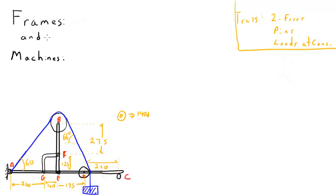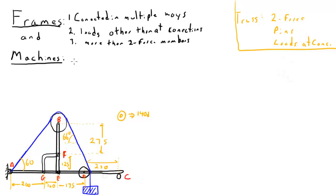So frames and machines are a little bit different. For frames and machines, we're talking about systems that can be connected in multiple ways. They can have loads other than at connections and more than two force members. A frame is a static system, so there's nothing that's supposed to move when you have a frame. And a machine, even though we're going to analyze it in a static situation, i.e. it's not moving, it's designed to move.